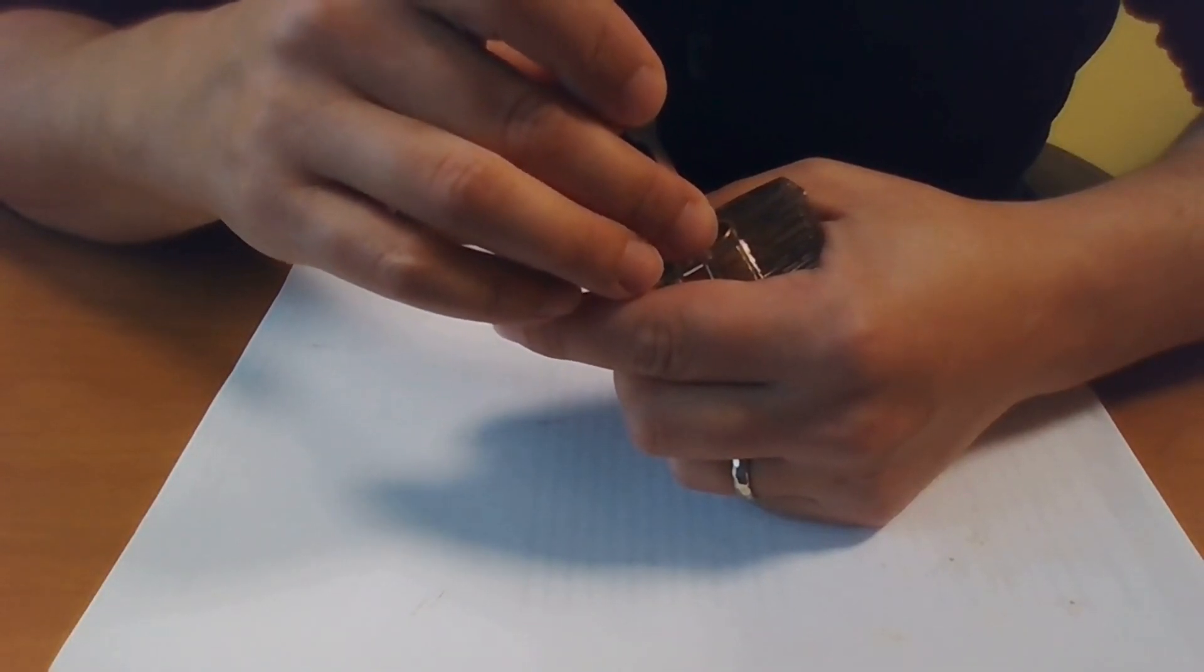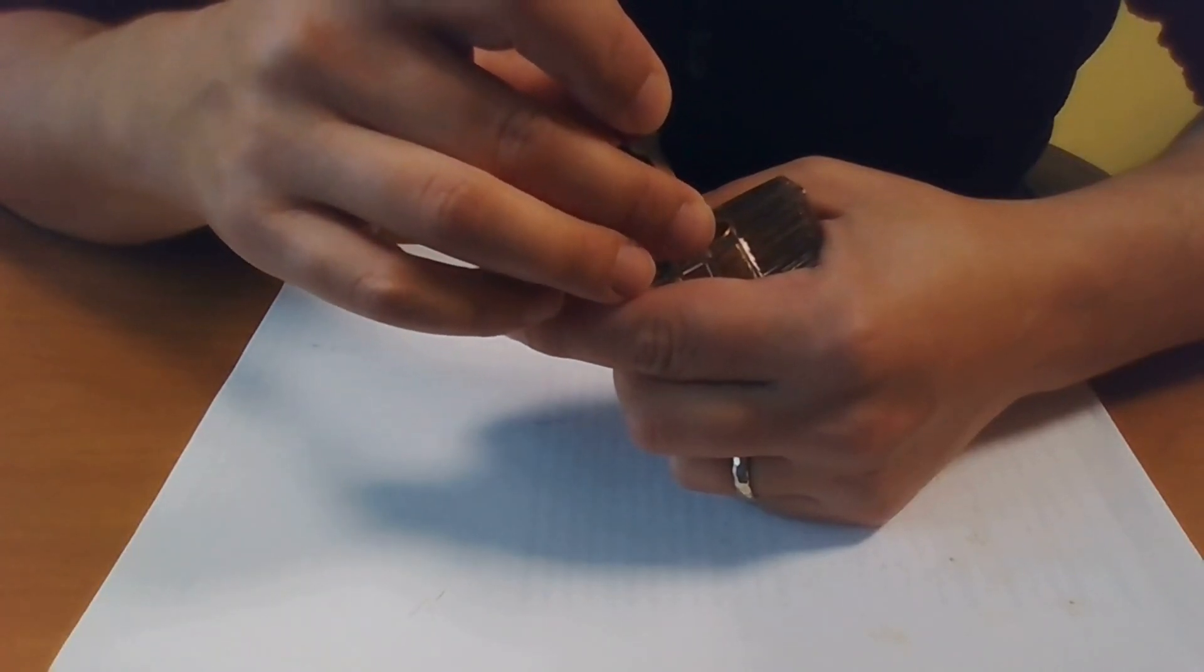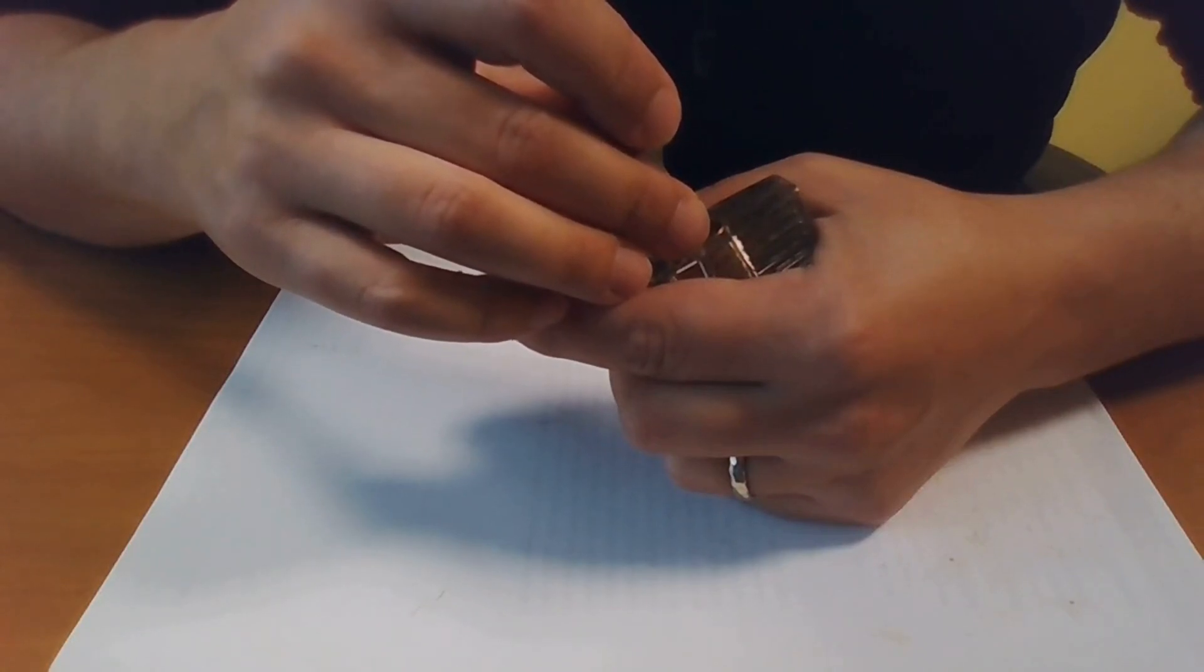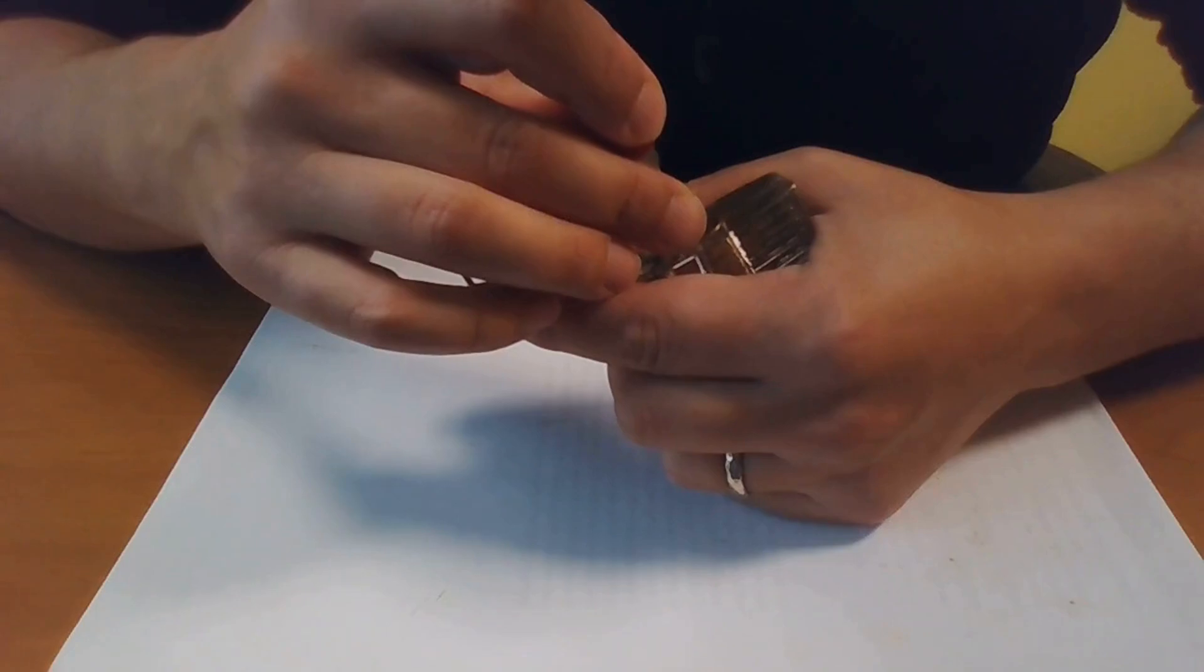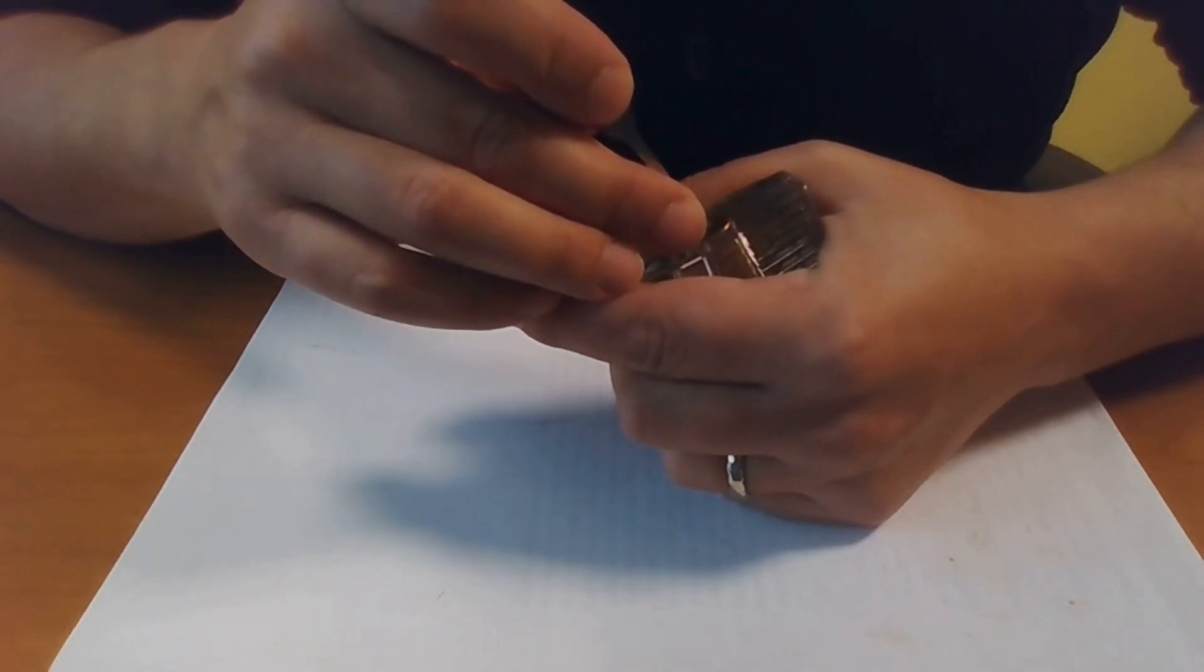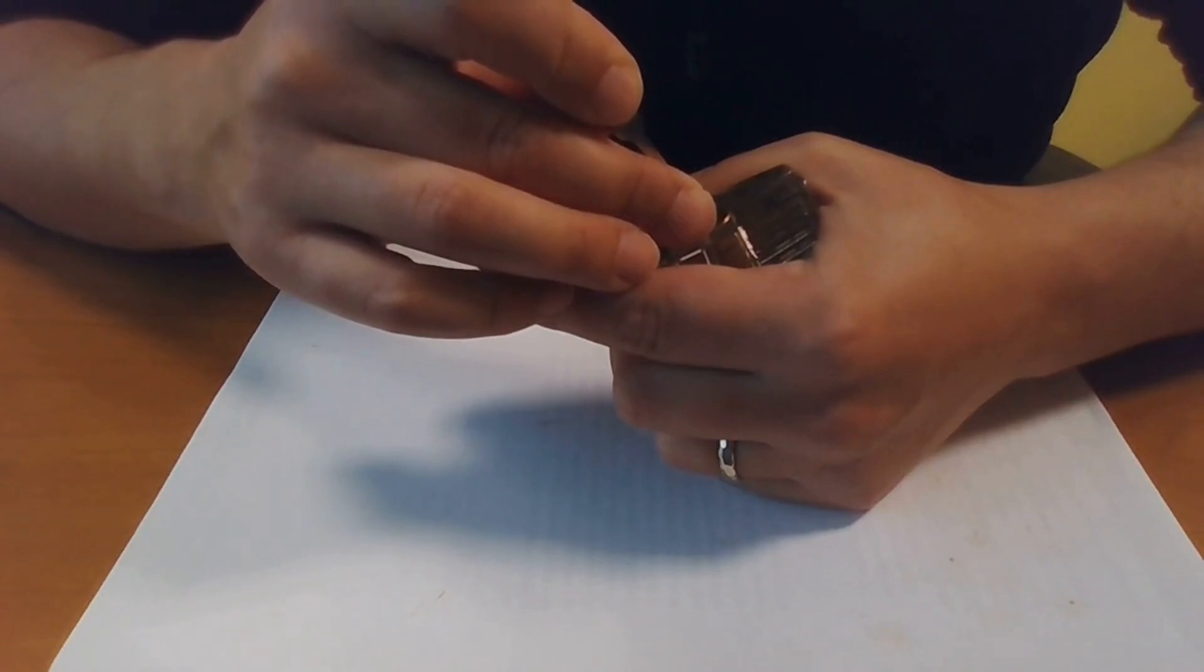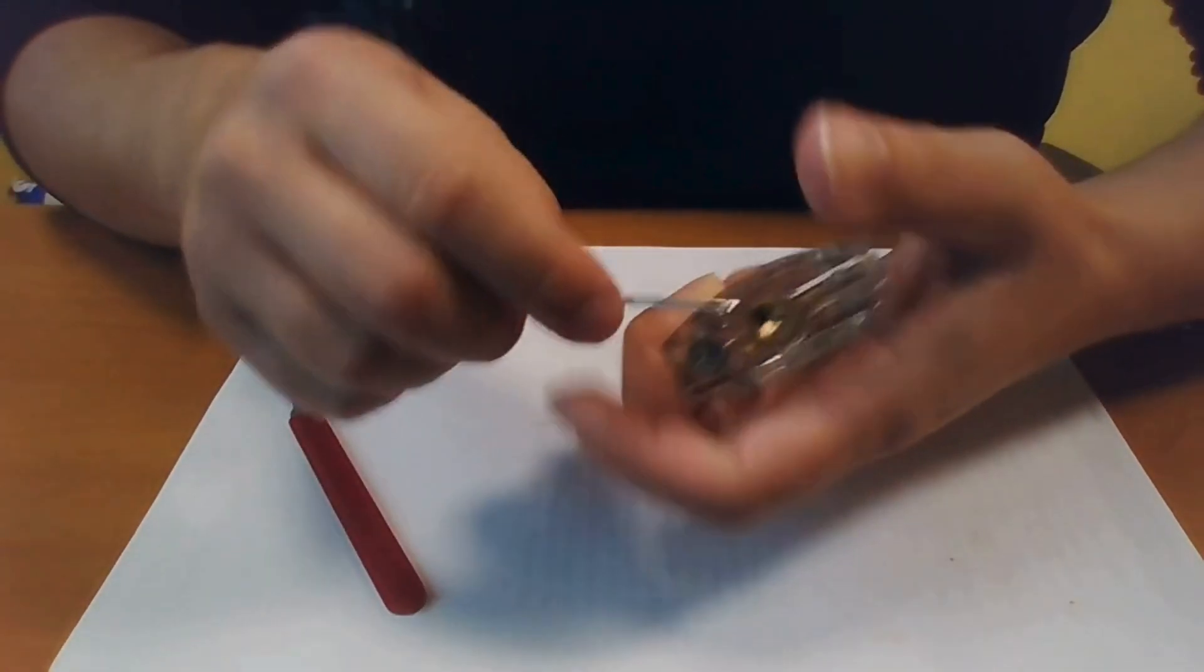Number one is springy, number two is springy, number three was bound, number four was springy, number five - this is a six pin lock - number six is binding, number six is set. Now back again from one. One is springy, two is springy, no two is binding, no it is set. Three, four - four was binding and I got this open.